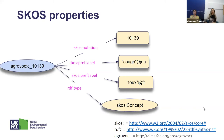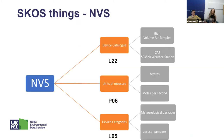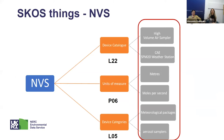Not only can you list things with SKOS, but you can actually add properties to describe them in more detail. Here you can see a thing, and using the RDF type property, you can identify that this thing is a SKOS concept. It has a preferred label that is 'cough' written in the English language. You can also use another preferred label with a different language — in French, that is 'toux'. You can then use several other properties to further define your thing.